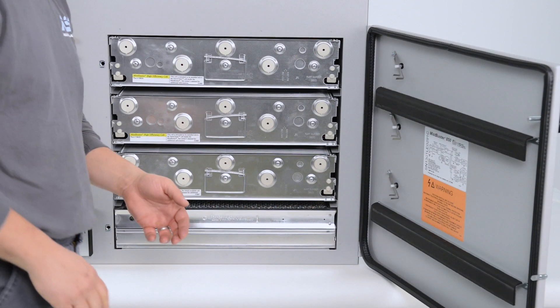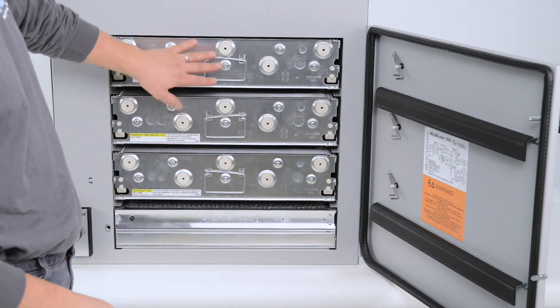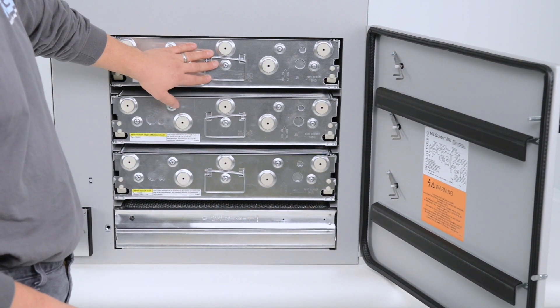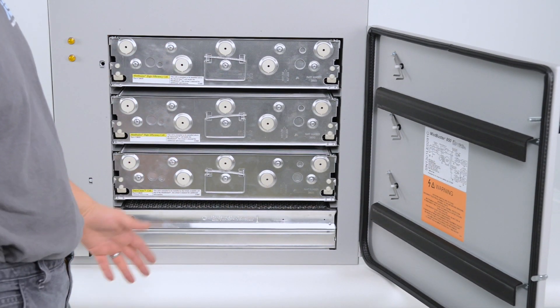Some 850 models come with only two collection cells. The third collection cell is an option. If yours has two cells, that is okay. The machine will function correctly.